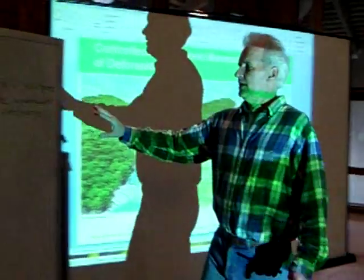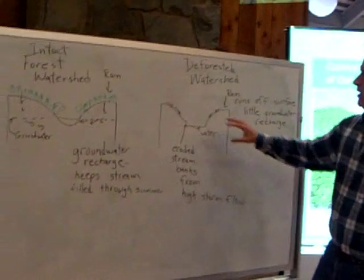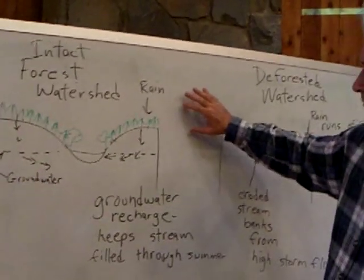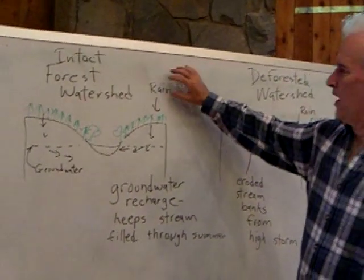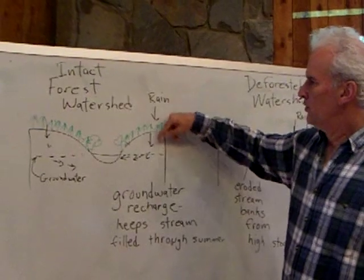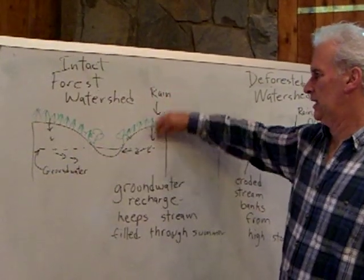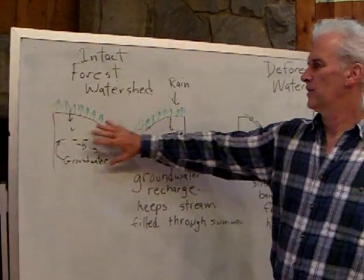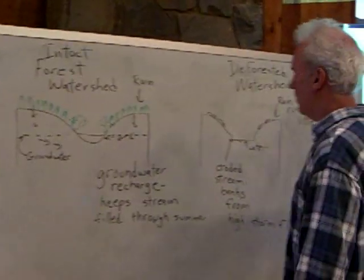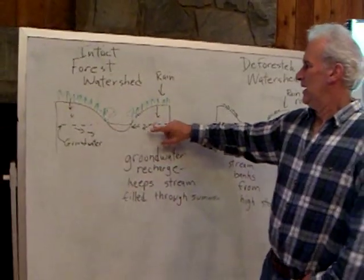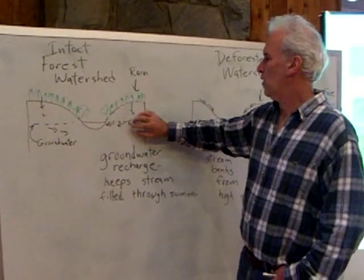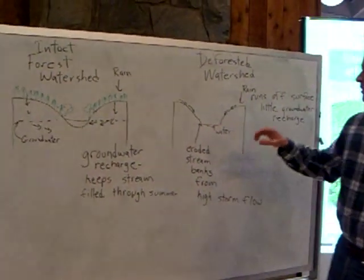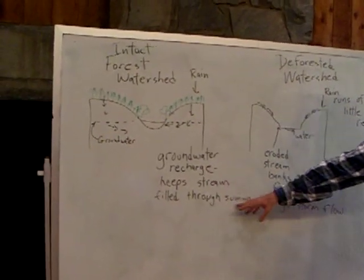Basically what happens - can you put it up on the board here? There we have an intact forested watershed. When it rains, you get infiltration into the ground, into the soil, and into the groundwater. The rainwater becomes groundwater. And over the summer when it's dry, as in this photo with blue sky, that groundwater very slowly trickles down and keeps the stream full. So you get groundwater recharge; it keeps the stream filled through the summer.